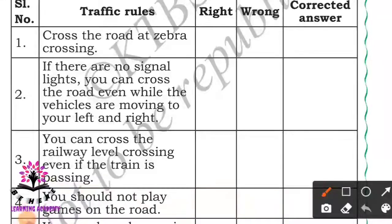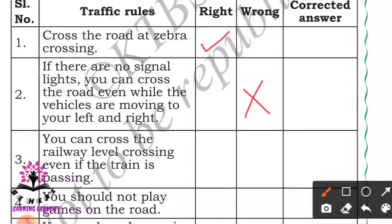Here is a list of traffic rules that a pedestrian should follow. If it is right, put a tick mark; if it is wrong, put a cross and correct it. First: cross the road at the zebra crossing - it is correct. Second: if there are no signal lights, you can cross the road even while vehicles are moving to your left and right - this is wrong. If there are no signal lights, you have to be careful while crossing the road.